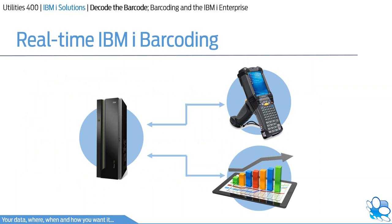Native IBM i real-time processing has an added advantage. Imagine that as a transaction is happening at point of process, that data is reflected in real time on a dashboard or management console. A great example of this is within the warehouse, where on a large plasma screen on the warehouse wall, we can display in real time a leaderboard of the most productive operatives, or live notices, alarms, or even announcements. We can send operative alerts or messages and have them respond immediately via their device. All these things and more are possible for the IBM i enterprise.